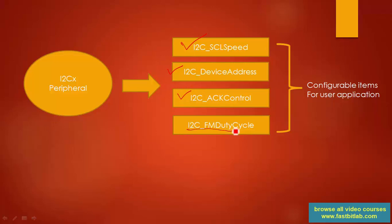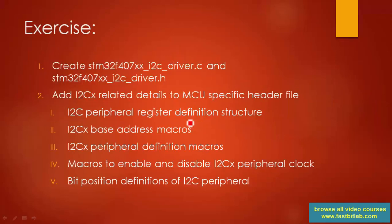If the communication speed — the serial clock speed — is more than 100 kHz, it is considered fast mode. In fast mode, the clock duty cycle can be varied, and we'll discuss that in more detail later. To hold that information, we are going to create a member element in the configuration structure where the user can specify the duty cycle when the I2C peripheral is in fast mode. So these four items are the configurable items for the user application, and from these you have to create the configuration structure.